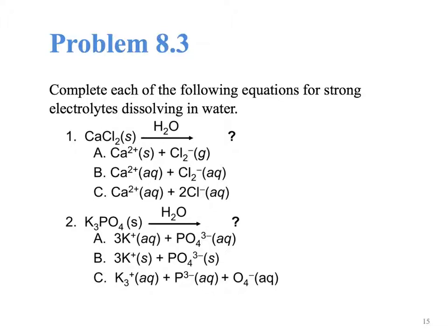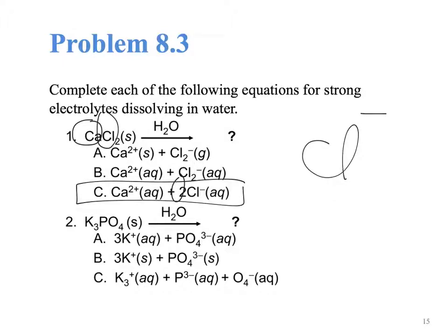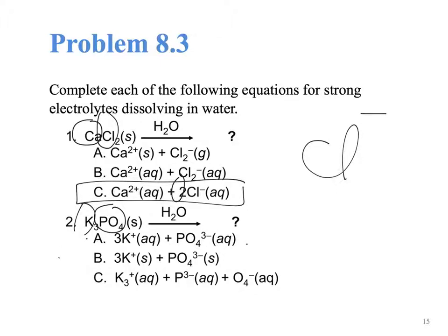Let's complete the dissociation of the following solutes. Calcium is in group 2, so it will be 2+. Chlorine is in group 7, so its charge is −1. How many chlorines do we have? We have 2 — and that is a number of moles, so the answer is C. Potassium is in group 1, so its charge is +1, and we have 3 of them. Phosphate has a charge of 3−, so the answer could be A or B. The difference is AQ or solid — AQ means it will dissociate completely in water and be in solution, so the only possible answer is A.